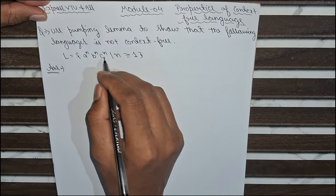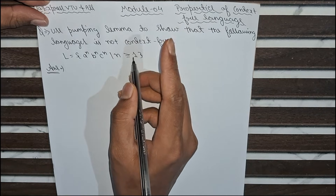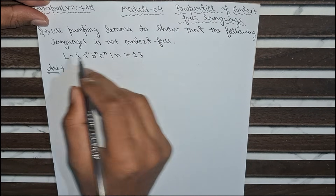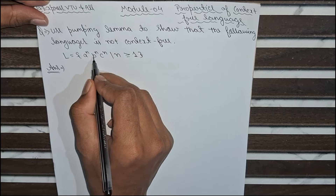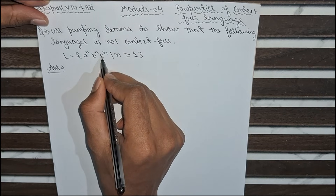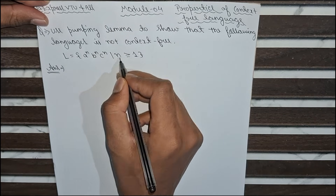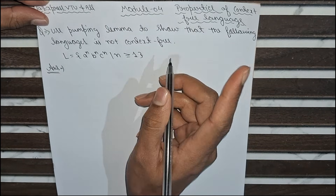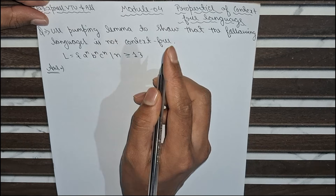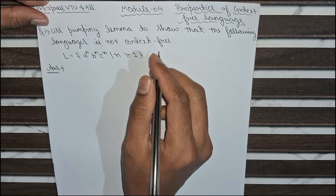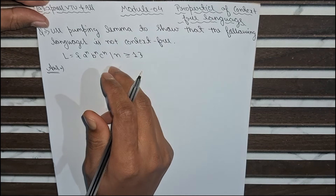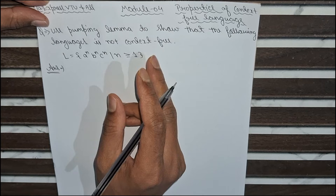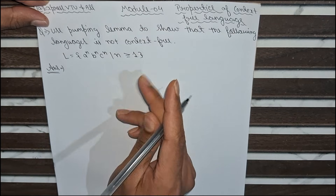This question can be asked in a different way in which the input alphabets only change. It can be asked as 0 to the power n, 1 to the power n, 2 to the power n where n is greater than or equal to 1. The approach will be the same; only the input symbols will be different. So now we will prove this language is not context free by Pumping Lemma theorem.